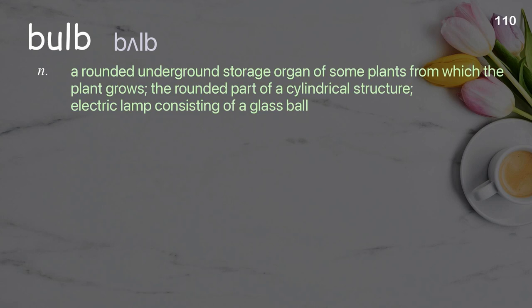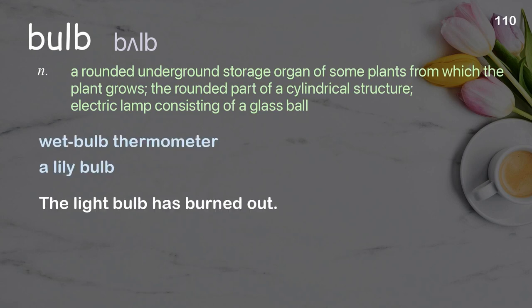Bulb: a rounded underground storage organ of some plants from which the plant grows; the rounded part of a cylindrical structure or electric lamp, consisting of a glass ball. Examples: wet bulb thermometer, a lily bulb. The light bulb has burned out.